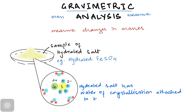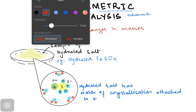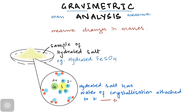A hydrated salt has water of crystallization attached to it. In the ionic lattice, you have the water of crystallization. This water of crystallization can be removed by heating, and then we can see how much loss of water has happened.